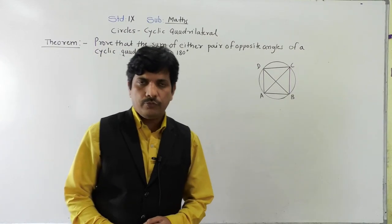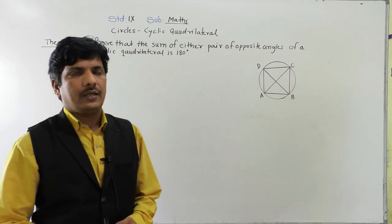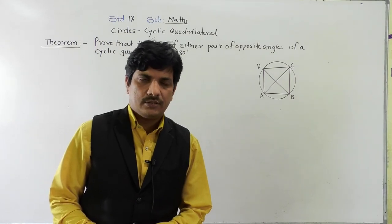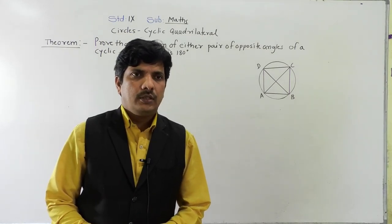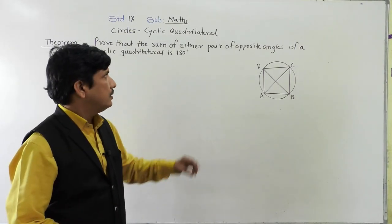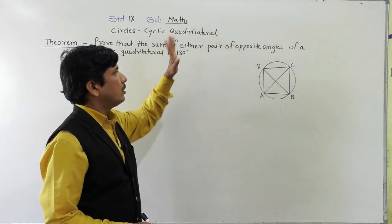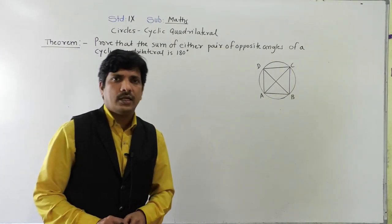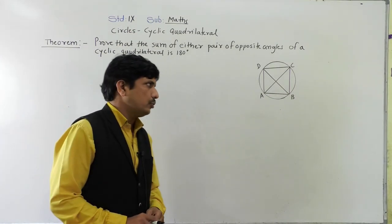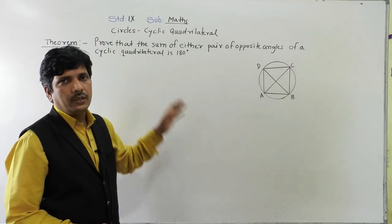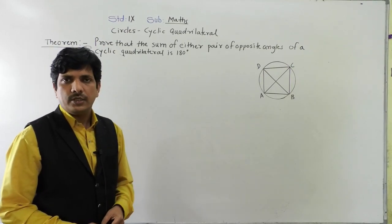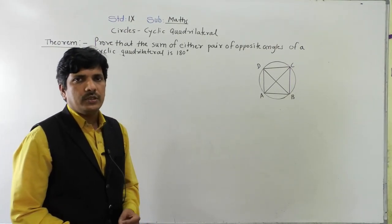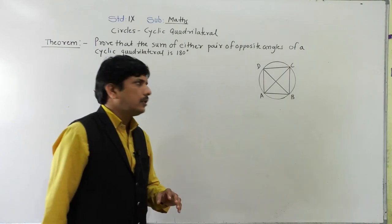Hello everybody. Today we are going to start a new point from the chapter circles. The name of the point is cyclic quadrilateral. What is a cyclic quadrilateral — that we will see in short. Afterwards we are going to see theorems which depend on the cyclic quadrilateral. We are going to study the properties of cyclic quadrilateral.